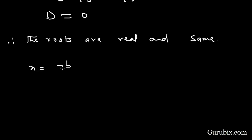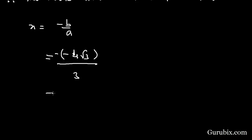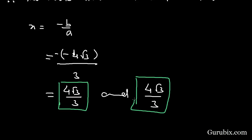Since b = -4√3, we put a minus before it to get -b = 4√3, and a = 3. Therefore, the roots are 4√3/3 and 4√3/3. This is the solution to the question. Thank you.